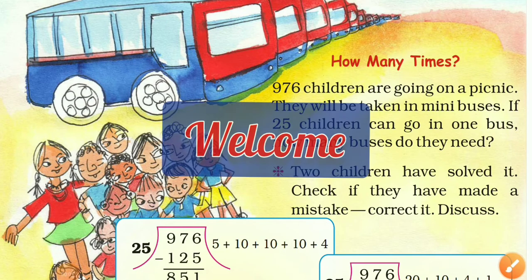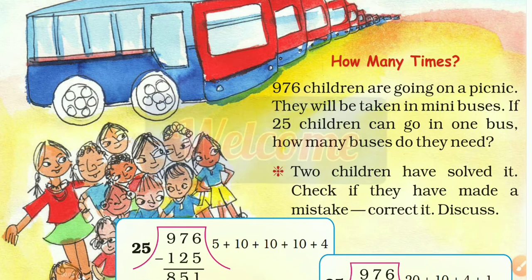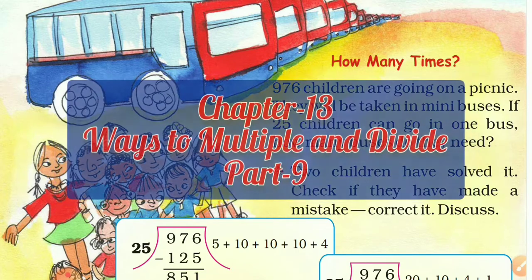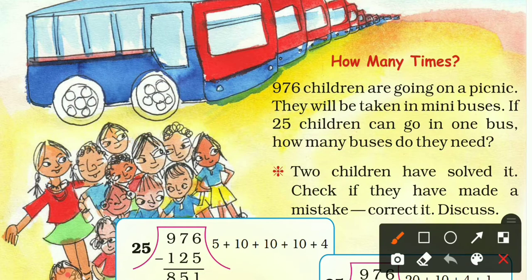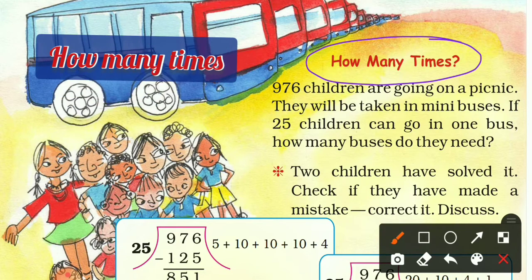Hello dear students and welcome back to this online class video. This is the ninth part of the 13th chapter, 'Ways to Multiply and Divide,' of Class 5 Mathematics. I am Jay Prakash. Let's start the class. Today's topics are: first, 'How Many Times'; second, 'How Much Petrol'; and third, 'Children's Day.'